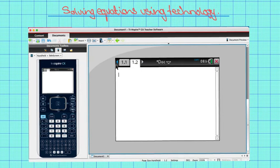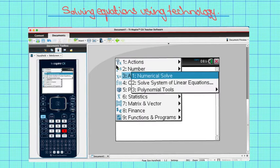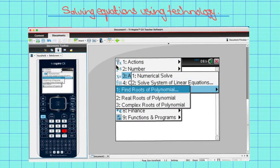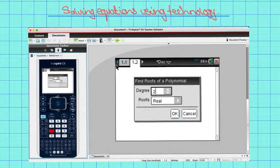Then we need to go to menu, 3 algebra, 3 polynomial tools, 1 find roots of a polynomial. Then this box appears.